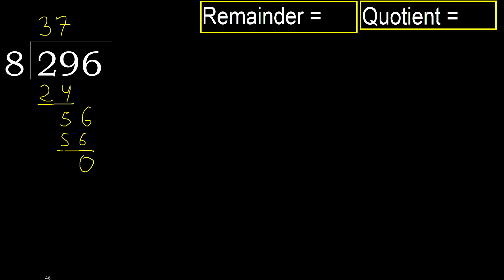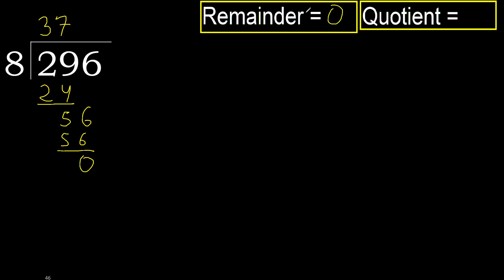That is not a number, therefore finish it. 296 divided by 8 is 37.